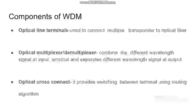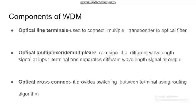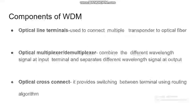Components of WDM systems. First, optical line terminals, which are used to connect multiple transporters to optical fibers. Second, optical multiplexer and demultiplexer — the multiplexer combines different wavelength signals at input terminals and the demultiplexer separates different wavelength signals at output terminals. Third, optical cross connect, which provides switching between terminals using routing algorithms.